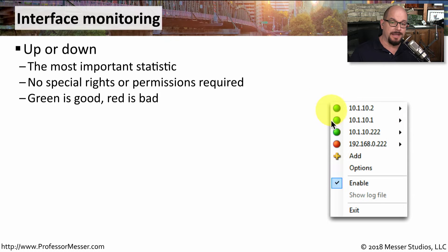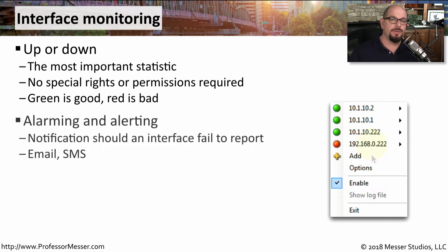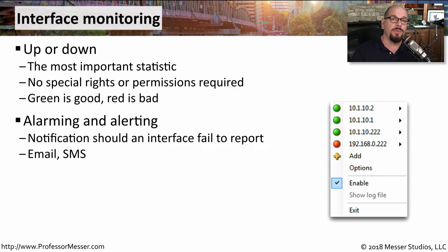Green would obviously designate that the interface is up and running, and red would indicate one that is no longer responding to our queries. These are commonly automated functions that continue to run all day, periodically checking to see if an interface is available. If an interface is suddenly unavailable, you'll want to create alarms and alerts, notify the proper people, open a ticket in your help desk system, send an email notification, or send a text message.